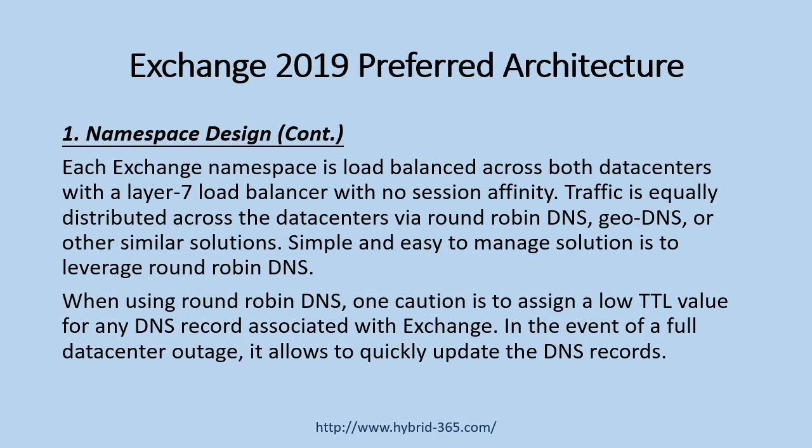A simple and easy to manage solution is to leverage round-robin DNS. When using round-robin DNS, one caution is to assign a low TTL value for any DNS record associated with Exchange. In the event of a full data center outage, this allows quickly updating the DNS records.